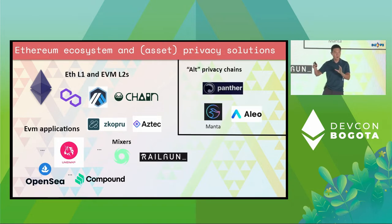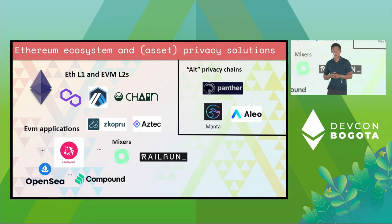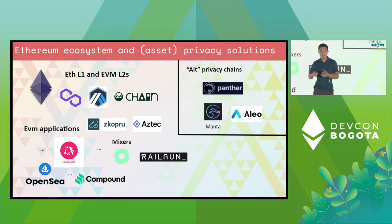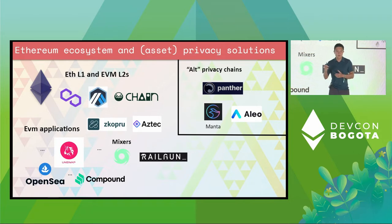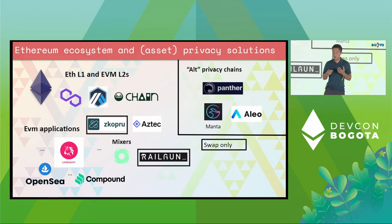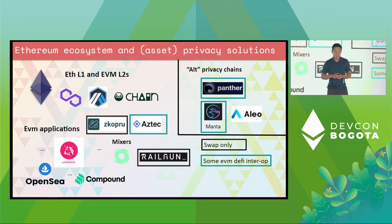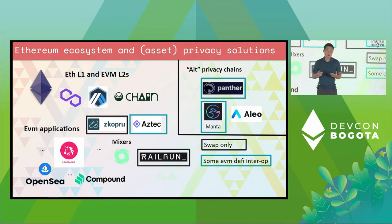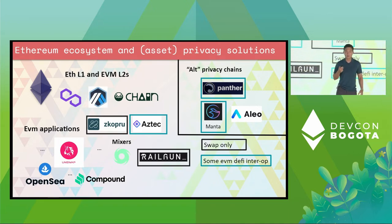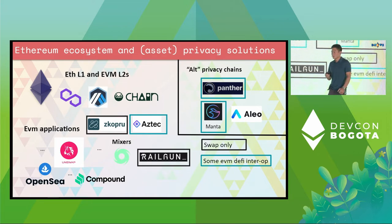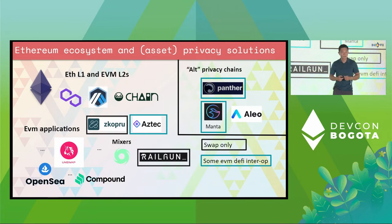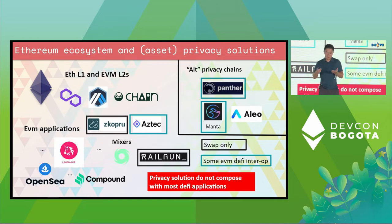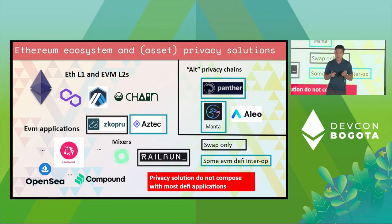On the other hand, we also have privacy L1s — examples like Aleo and Manta — where it's a separate chain, a different ecosystem, and you have to bootstrap other liquidity. It turns out there's no single solution that works with all DApps. Aztec Connect allows pretty good DeFi interoperability, but it's not completely compatible with every single DApp. For Aztec Connect, you need to write a custom bridge contract — that's what people do at every single Aztec hackathon. That's not scalable if you want this to support every single DApp project out there. We don't have a privacy solution that is default and really usable.